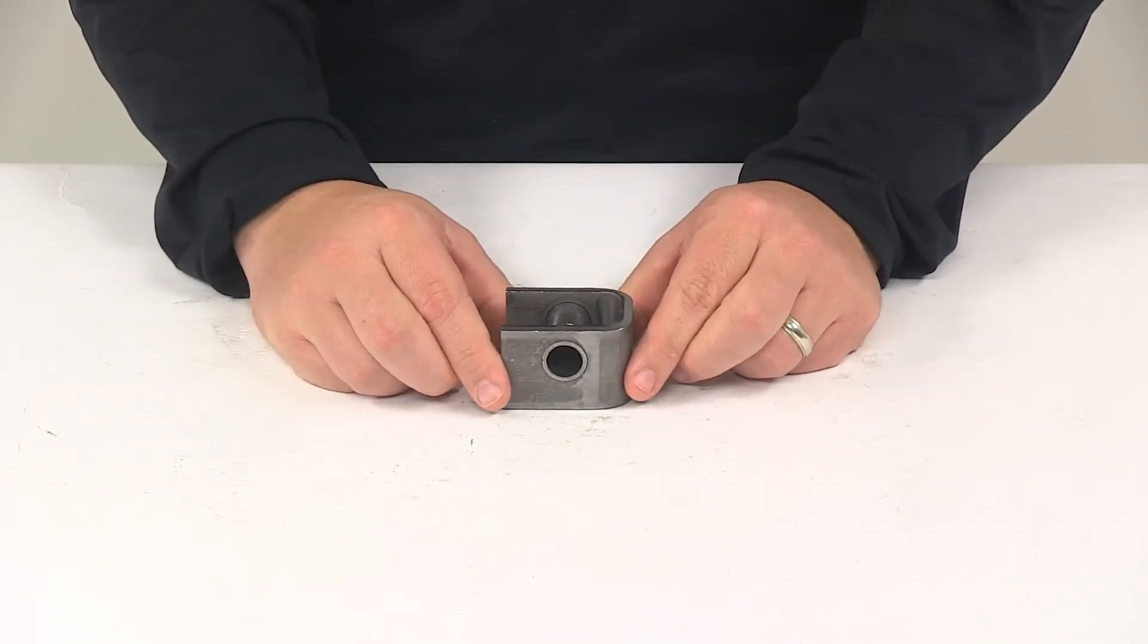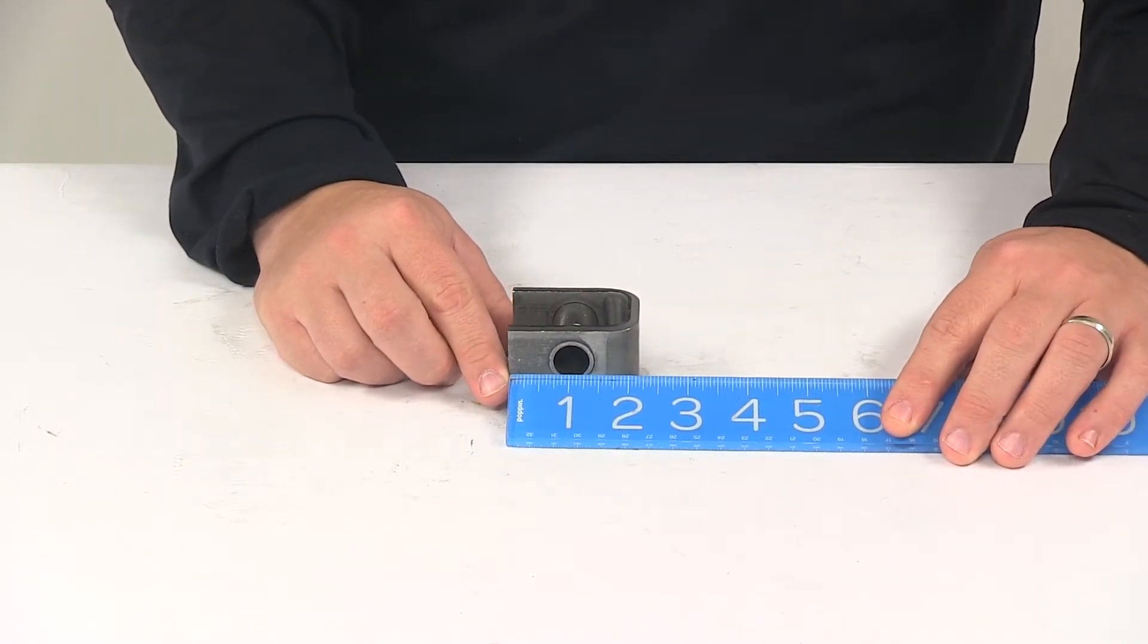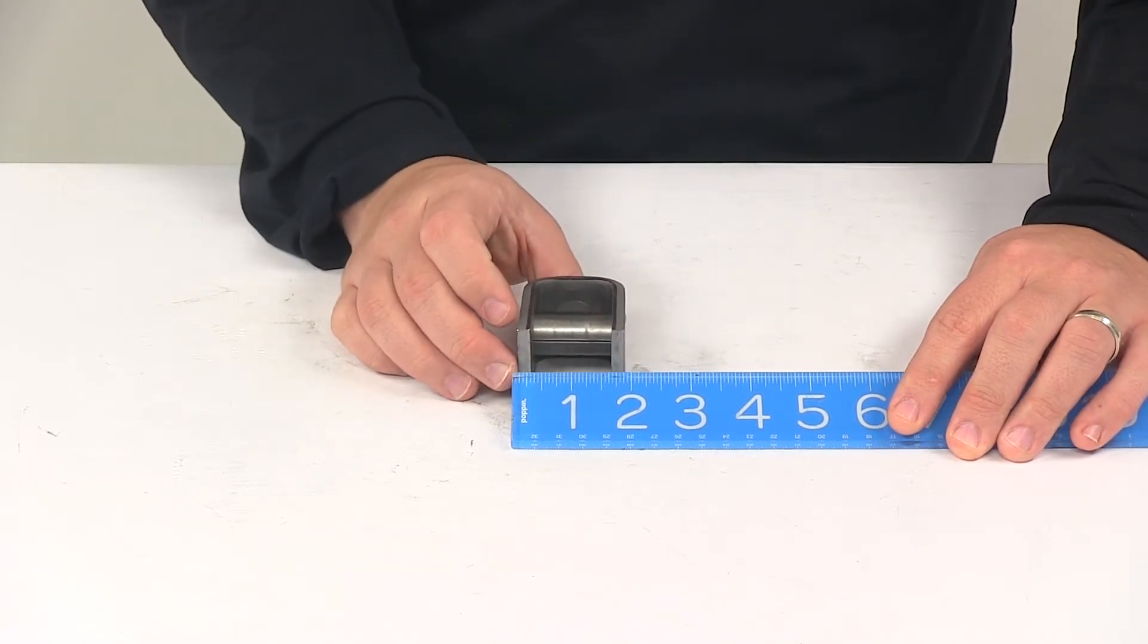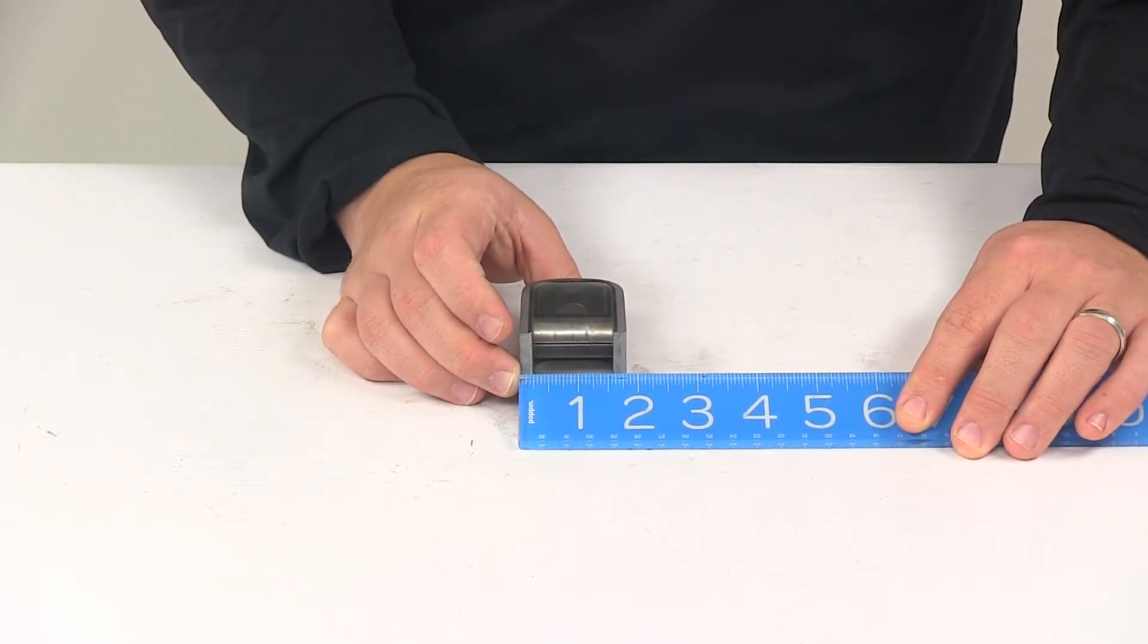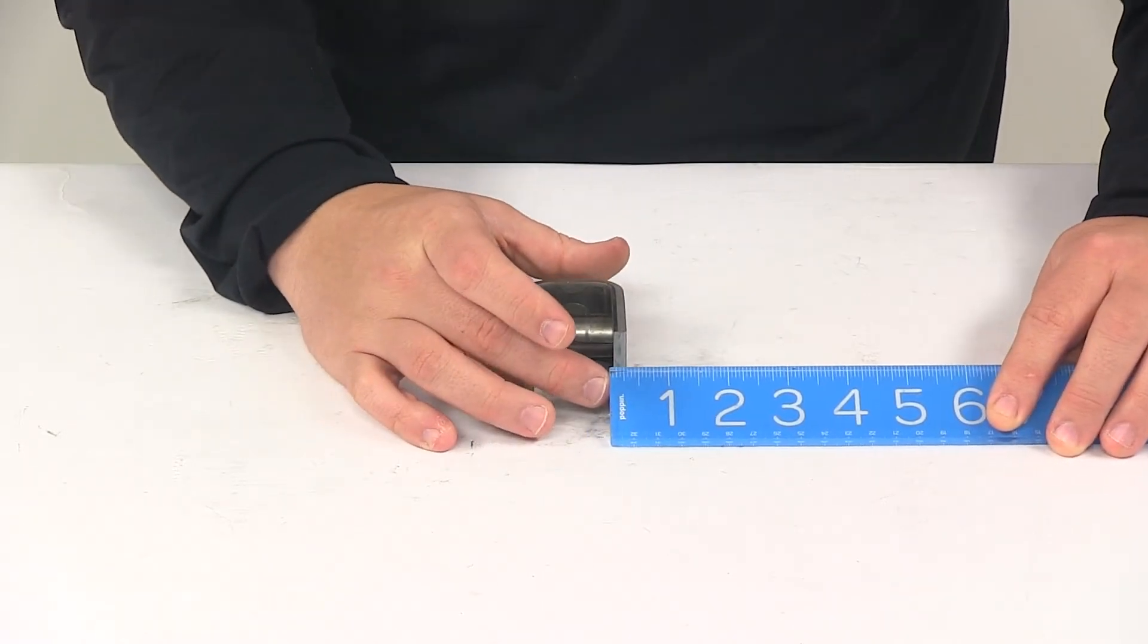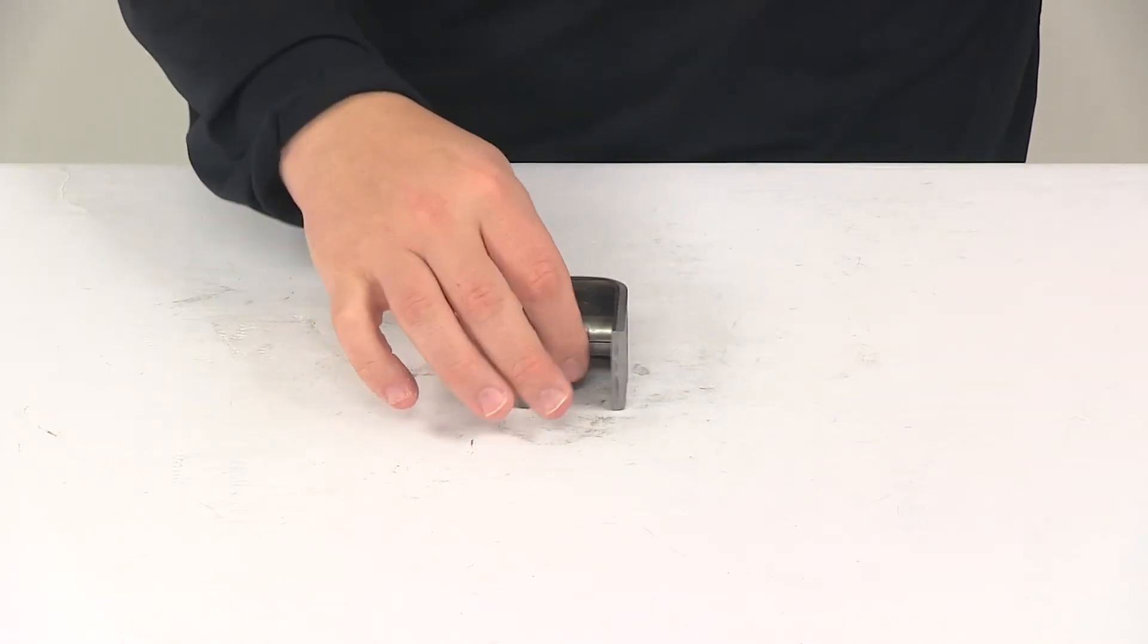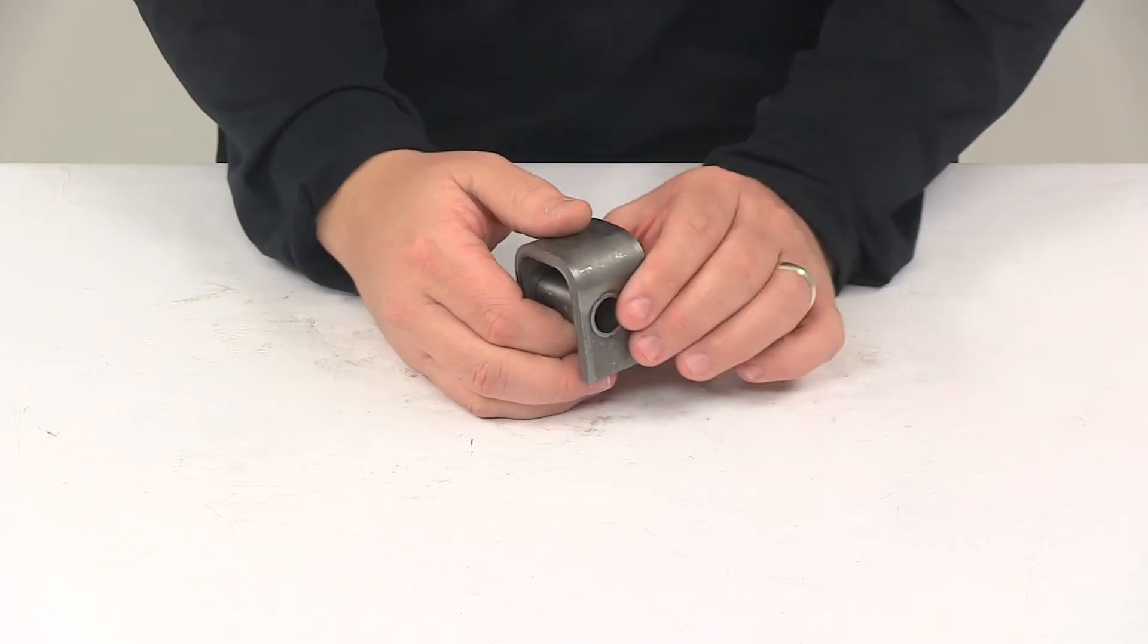Taking a look at the length measurement real quick, it's going to give us a measurement of about two and one eighth of an inch. The width measurement measures one and three quarters of an inch. And then the thickness, it's going to measure three sixteenths of an inch thick. It's made from a nice, durable steel construction.